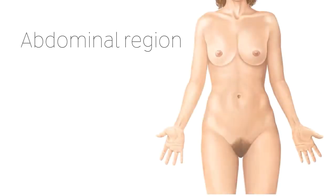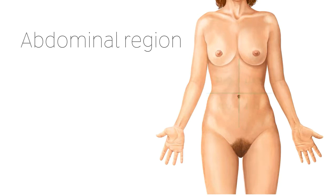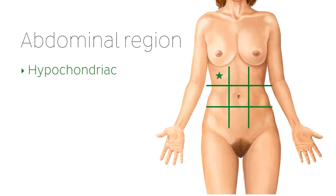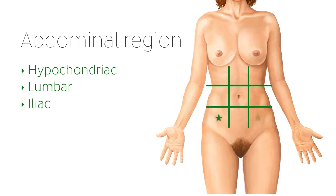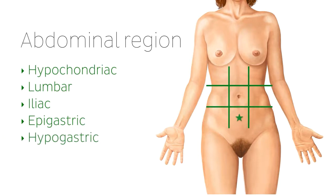The next region of the axial region is the abdominal region. The abdominal region can be more generally divided into four quadrants: the left and right upper quadrants, and the left and right lower quadrants. When more specificity is required, it can also be divided into nine regions: the left and right hypochondriac regions, the left and right lumbar regions, the left and right iliac regions, the epigastric region, the hypogastric region, and in the centre, the umbilical region.